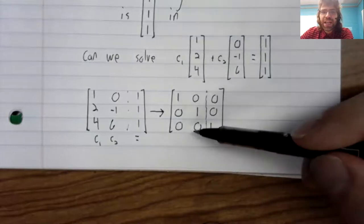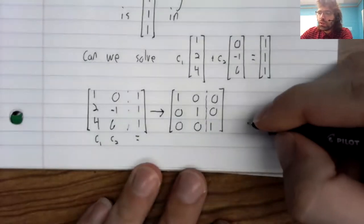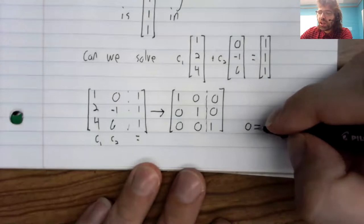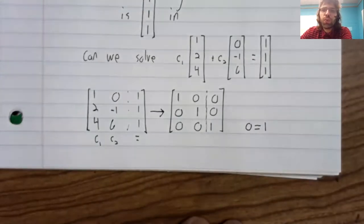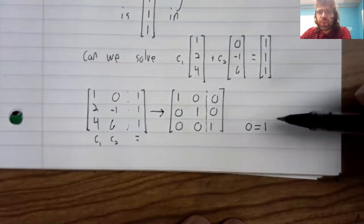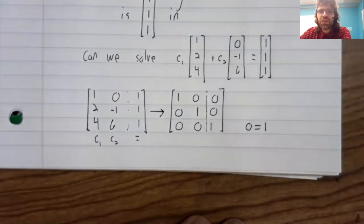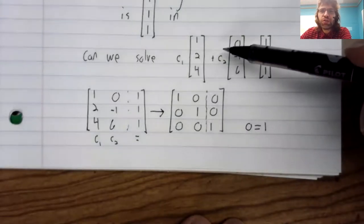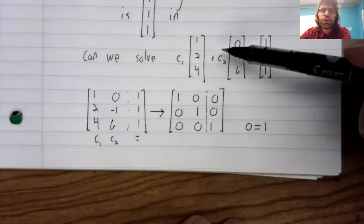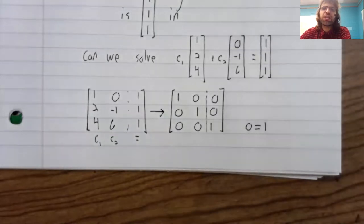This last row is telling us that zero equals one. Clearly, there is no way to have that. This vector equation is inconsistent.